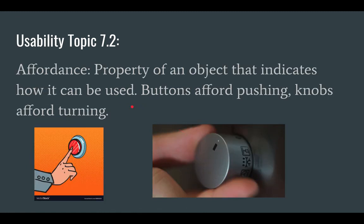Affordance is the property of an object that indicates how it can be used. Buttons afford pushing — you know a button is for pushing. Knobs afford turning — you know you're meant to turn a knob. That's called affordance.